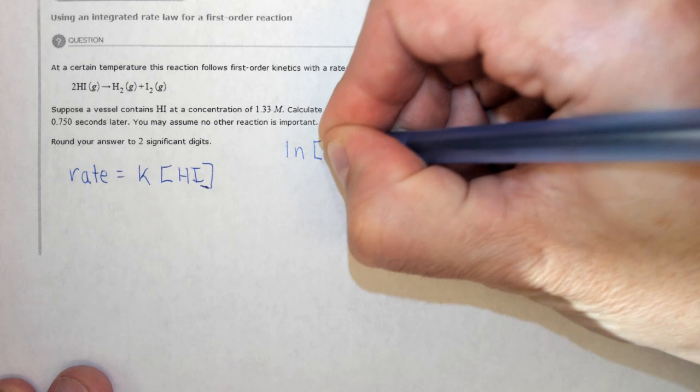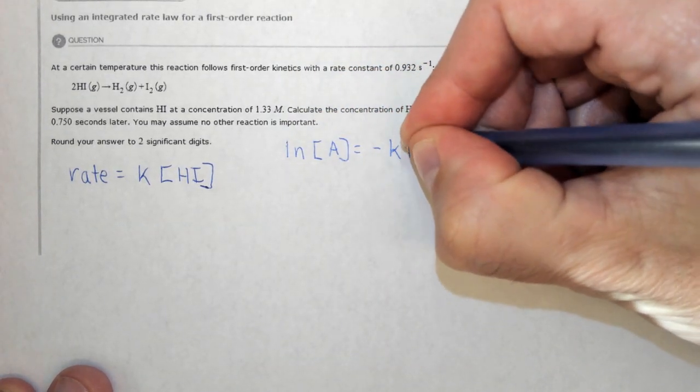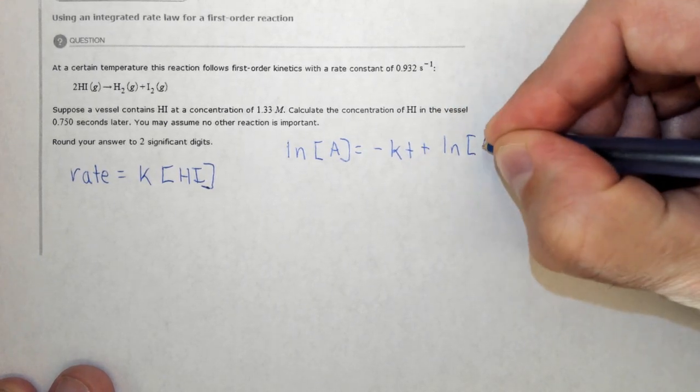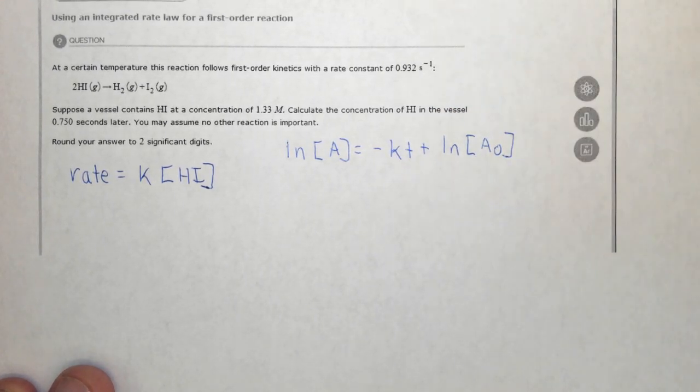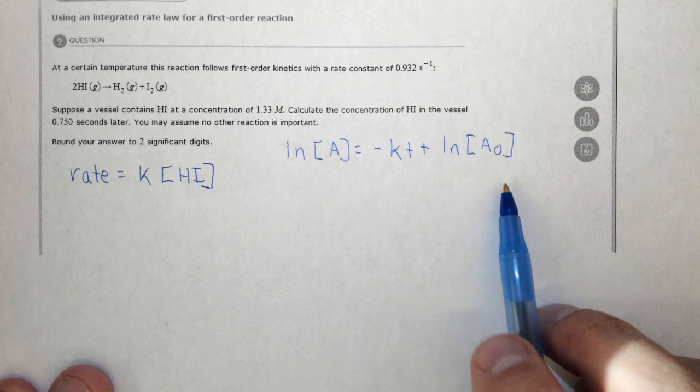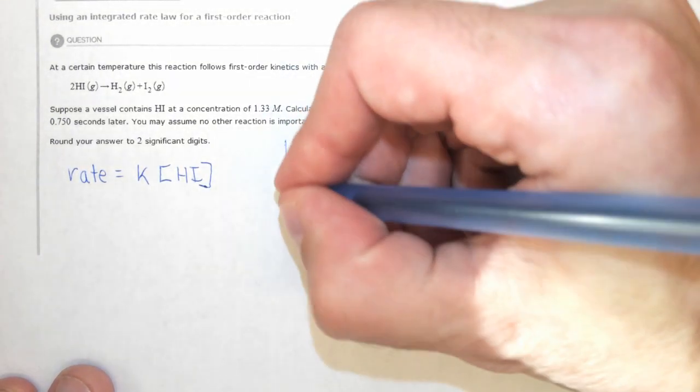Which has a general form: ln[A] = -Kt + ln[A₀], which is the initial concentration. And this is for the first-order integrated rate law. It's different for a zero-order or a second-order, but this is the first-order integrated rate law.